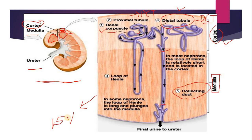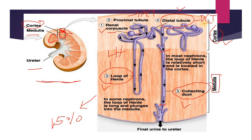The loop of Henle and collecting duct are present deep inside the medulla of the kidney, so this is called the juxtamedullary nephron. The parts of the nephron are: number one, renal corpuscle; number two, proximal tubule or PCT; number three, loop of Henle, also called LH in short form; and the distal convoluted tubule along with the collecting duct — these are all parts of the renal tubule.